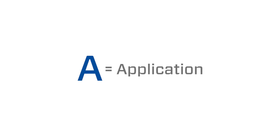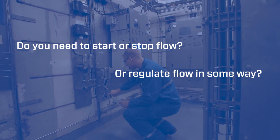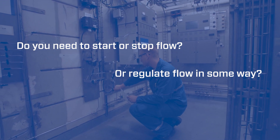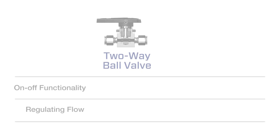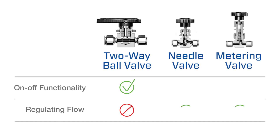Next, think about your application. Do you need to start or stop flow, regulate flow in some way, or control the direction of flow? What about protecting your system from overpressure? A two-way ball valve is a good choice for on-off functionality, but not for regulating flow. If you need to regulate flow, a better option might be a needle or metering valve.